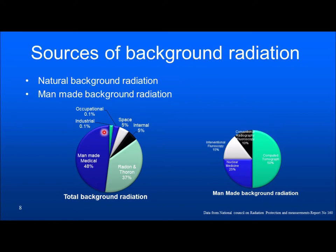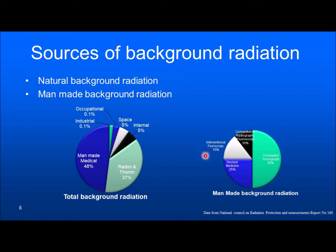Let us now have a closer look at what this man-made medical radiation is, which contributes to nearly 50% of total background radiation. Of that, 50% of the man-made is computed tomography (CT) — again U.S. data. Conventional radiography and fluoroscopy is about 10%, interventional fluoroscopy is about 15%, and nuclear medicine is about 25%.